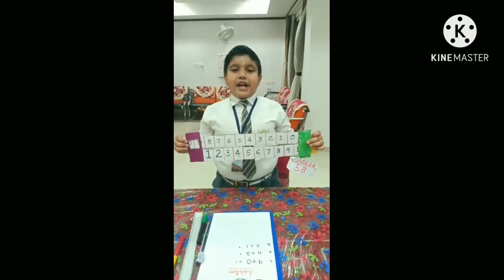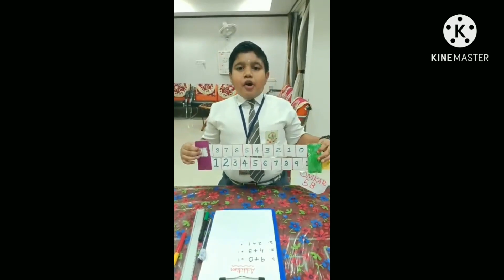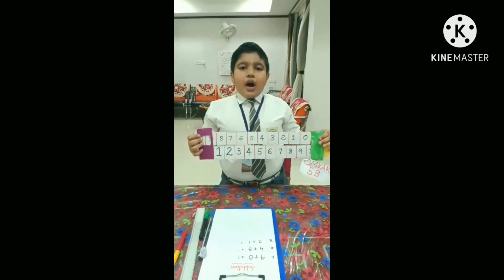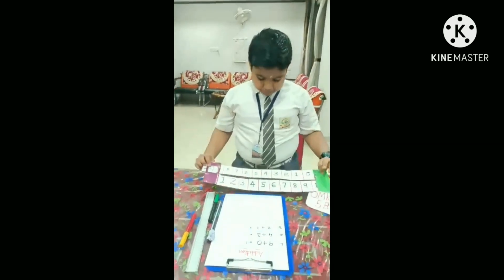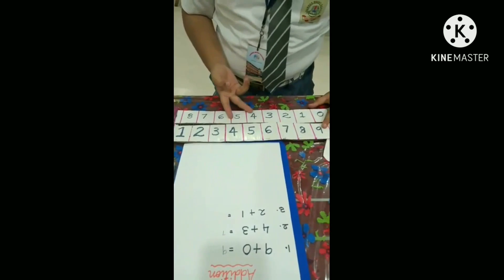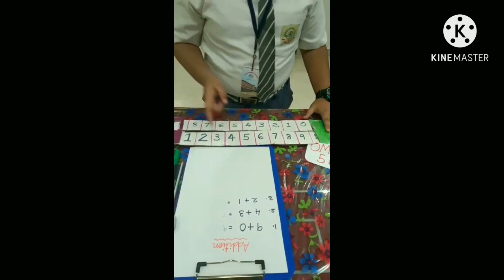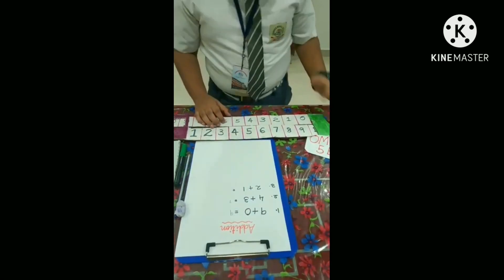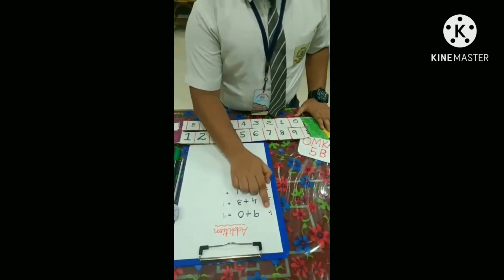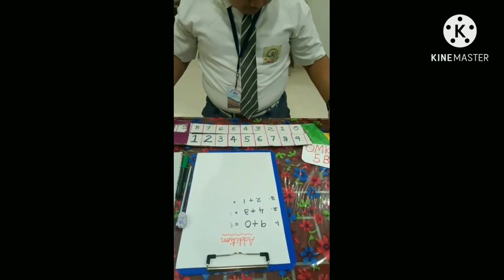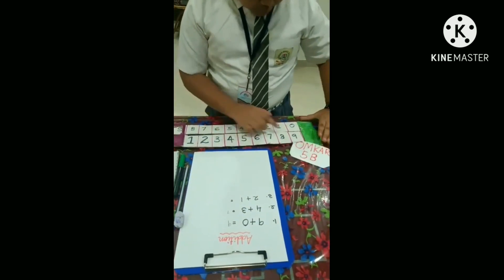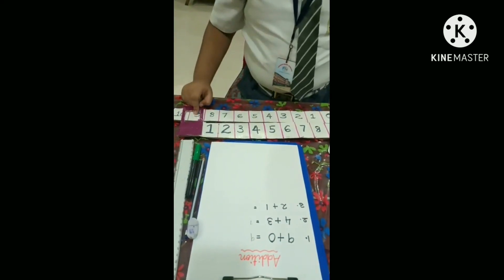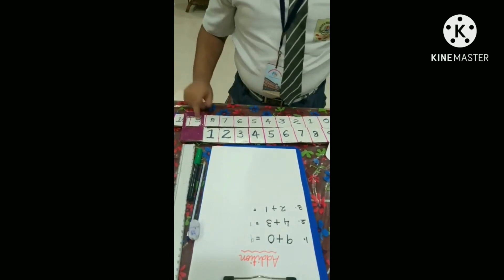Hello everyone, my name is Omkar. I am studying in 5B. Today I am presenting a Math Working Model. I will show you how this model works. Here you see 2 strips of paper, 0 to 10 and 1 to 10. Here are some problems. 9 plus 0 equals 9. 8 plus 1 also equals 9. 7 plus 2 also equals 9.